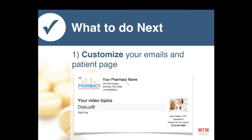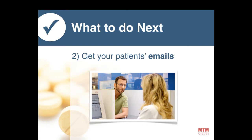So what to do next? First step: customize your emails and patient page if you haven't done it yet — add your logo, pharmacy name, signature, and picture of your staff. That can be done in the members section. Second step: get your patients' emails. Meet with your staff, explain the value of the videos, print patient sign-up sheets to leave at POS and reception, and continue asking for emails as long as you have patients who haven't given them to you.